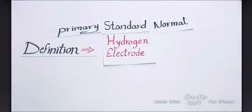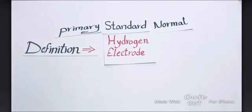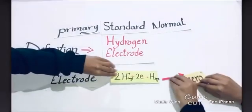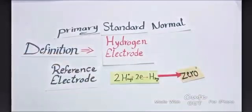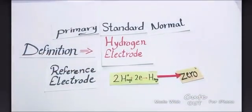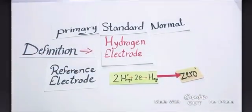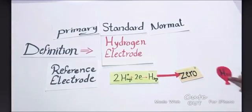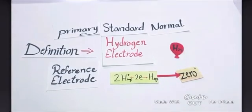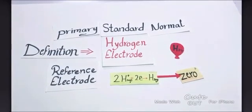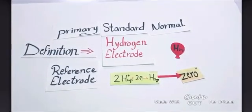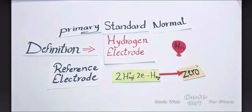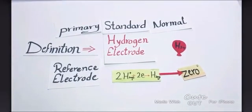The hydrogen electrode is a reference electrode whose potential is zero for all redox reactions. It is a type of gas electrode. It can also be used as an anode or cathode, depending upon the nature of the half cell it is used with.